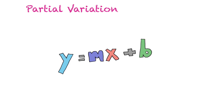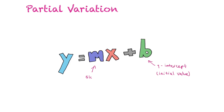In partial variation, if y varies partially with x, the equation is of the form y equals mx plus b. Here, b is the y-intercept, also called the initial value, and m is still the slope, which is also the rate of change.